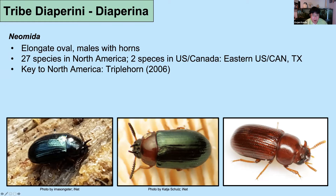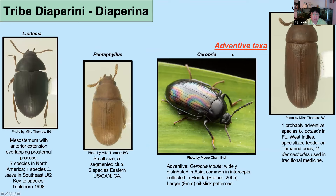Another commonly encountered genus in the US and Canada is Neomida — here is Neomida bicornis in red and green form and a bluer form. Although there are only two species in the US and Canada, this genus is very diverse in tropical parts of North and South America, and there is a key to species for North America. The smaller genus Leodema looks very similar to Platydema from above but can easily be distinguished on the underside by an anterior extension to the mesosternum that partially overlaps the prosternal process.